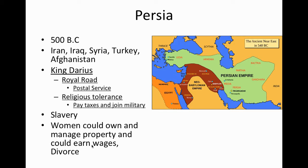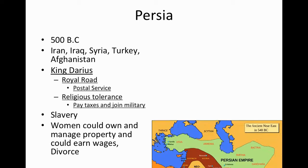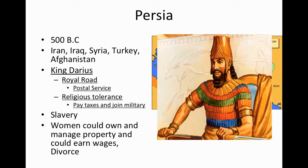In Persia, women actually had more rights than most groups. Women could own and manage property, earn wages through trade, and even initiate divorce. Again, that's pretty unique for this time period. So the Persians were a little more advanced when it came to human rights.